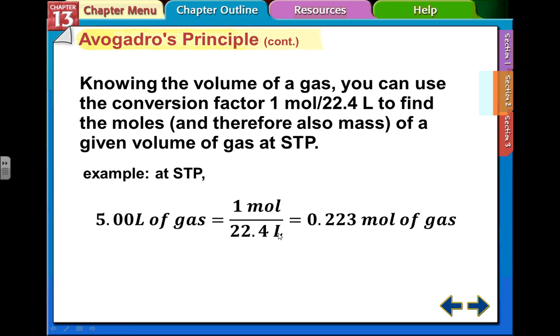The units cancel here. The liters cancel out, so you do five divided by 22.4, and you get 0.223 moles of the gas. So five liters, doesn't matter what kind, will give you 0.223 moles of whatever gas we're talking about.